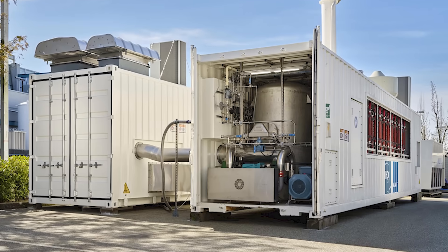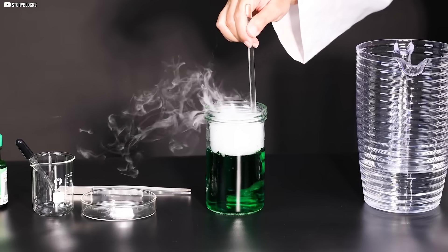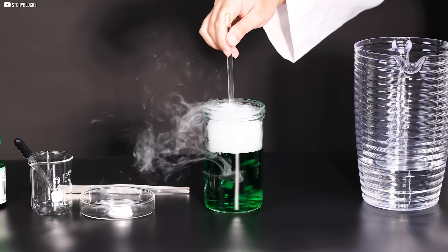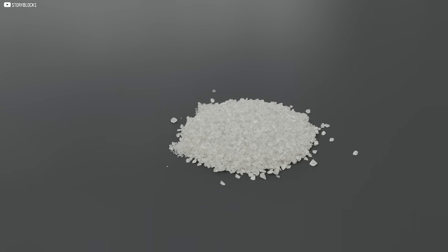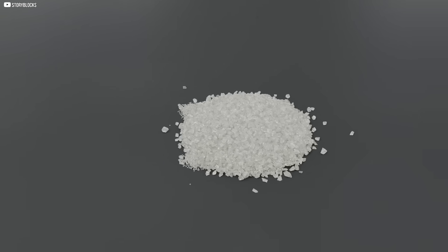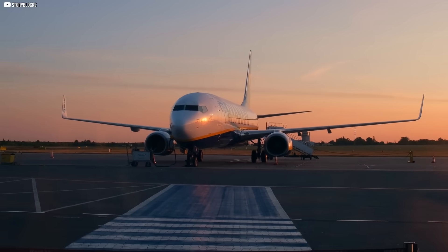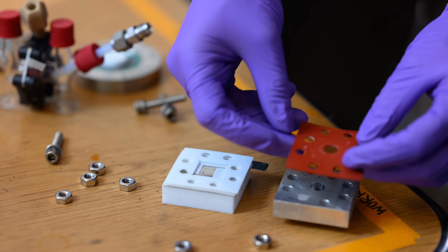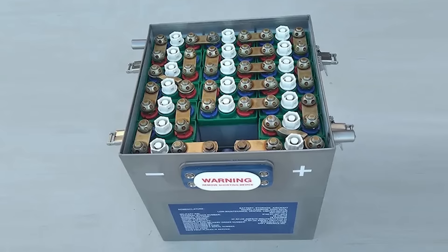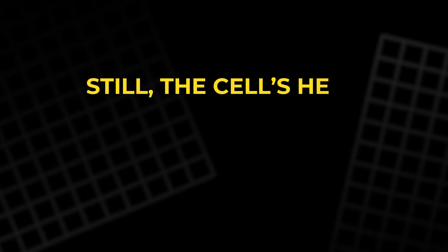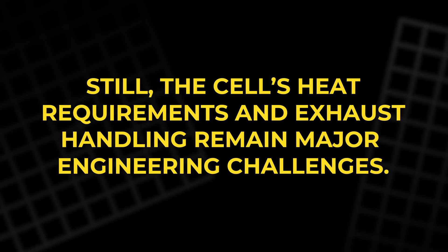One fascinating feature is how the fuel cell loses weight during operation. As sodium is consumed and the byproducts are ejected, the overall mass drops, similar to how planes burn jet fuel and land lighter. This dynamic weight reduction could offer efficiency advantages that batteries simply can't match. Still, the cell's heat requirements and exhaust handling remain major engineering challenges.